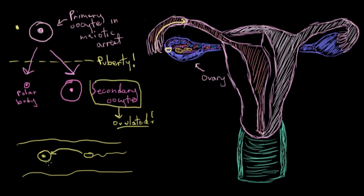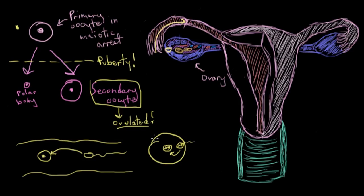As the sperm fuses with the egg, let's zoom in on what's happening. Here you have your large secondary oocyte, and the nucleus of the sperm is already inside the egg, moving toward the egg nucleus. This is when meiosis II happens. As the sperm nucleus travels toward the egg nucleus to create a joint nucleus, meiosis II occurs, and the oocyte reduces its chromosome copy number by creating a second polar body that divides off the cell — cutting the chromosome copy number in half again.